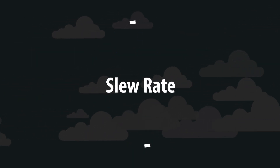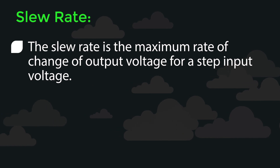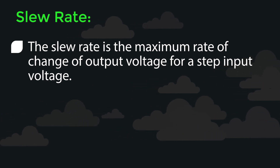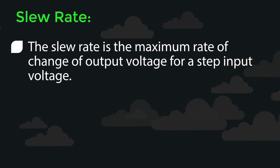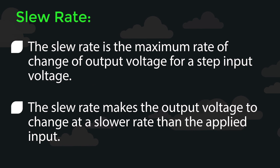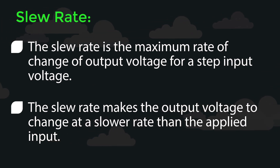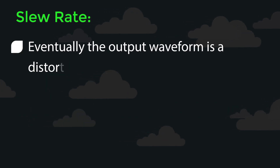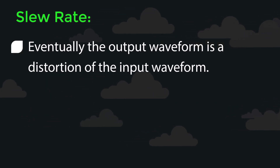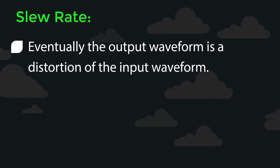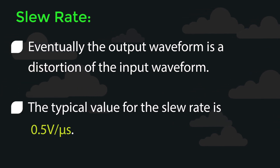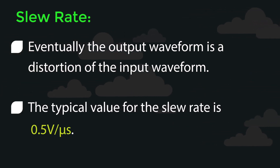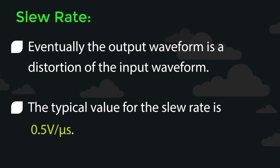Slew Rate: The slew rate is the maximum rate of change of output voltage for a step input voltage. The slew rate makes the output voltage change at a slower rate than the applied input. Eventually, the output waveform is a distortion of the input waveform. The typical value for the slew rate is 0.5 V/μs.